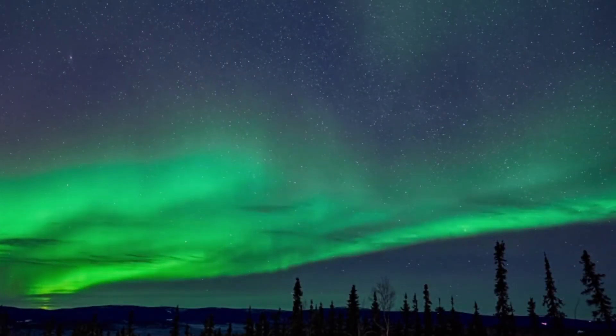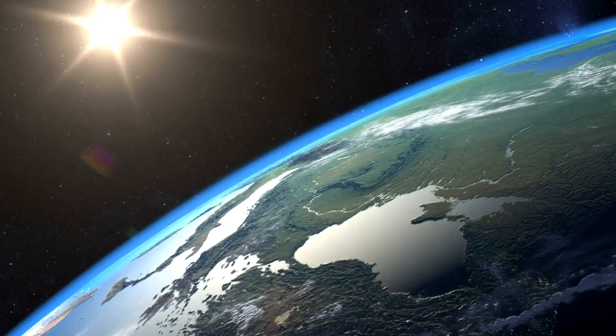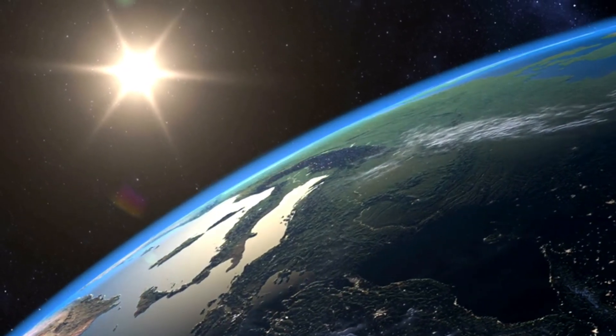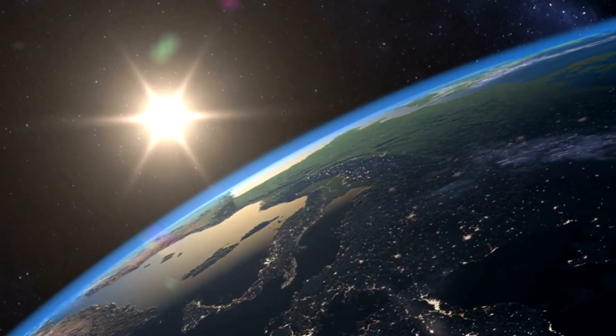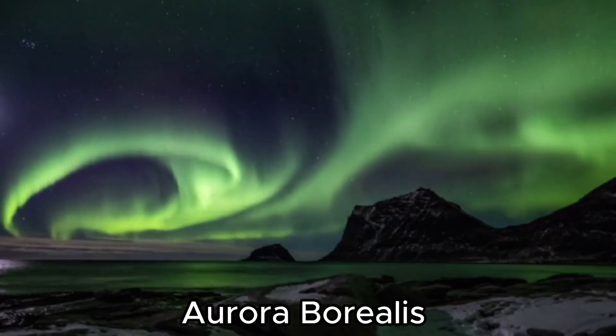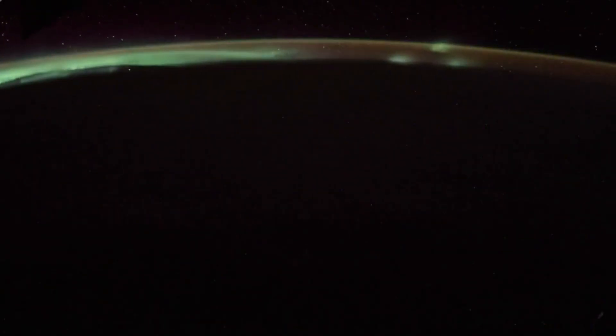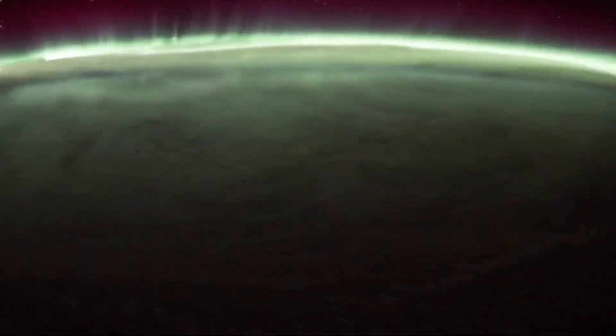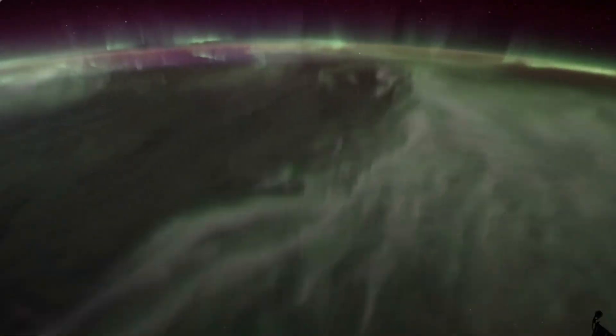Not everything the sun throws at us is dangerous. In fact, some of it is downright magical. The sun is constantly blowing out a stream of charged particles, what we call the solar wind. And when that wind hits Earth's magnetic field just right, boom, you get one of the most breathtaking shows on the planet. The aurora borealis and aurora australis, the northern and southern lights. It's not just pretty. It's a full-on cosmic dance between the Earth and its star. Space weather meets natural wonder. And it's absolutely stunning.